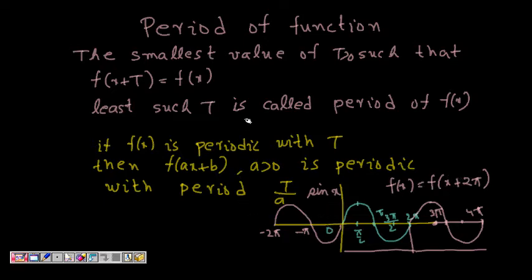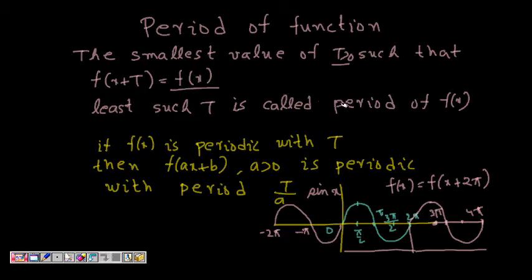But what exactly is the period? The period is the smallest value of T greater than 0 such that f(x + T) = f(x). The smallest value of T for which this holds is called the period of that function.